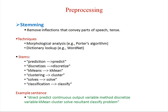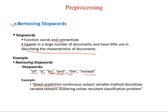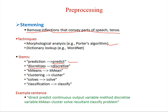The next step of preprocessing is stemming, which removes inflections that convey parts of speech and tenses. There are two approaches: morphological analysis algorithms like Porter's algorithm, and dictionary-based approaches like WordNet. For example, using a stemmer, the word 'prediction' is converted to its root word 'predict', and 'discretize' is converted to its root word 'discretize'. A sentence after applying stemming techniques will have all words converted to their root forms.